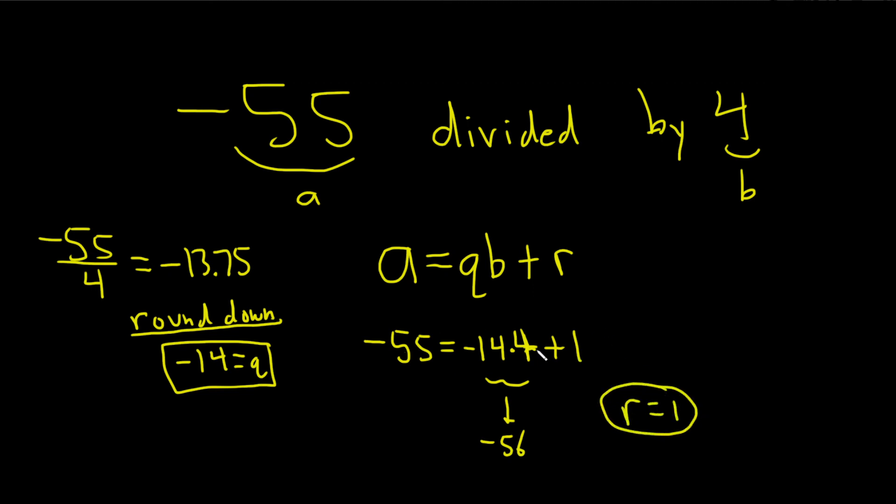And we should certainly check this equation. I'm going to type it in, this whole thing, and see what I get. Negative 14 times 4 plus 1 is negative 55, so it checks. So this is 100% correct. So that's our remainder and that's our quotient. I hope this video has been helpful.